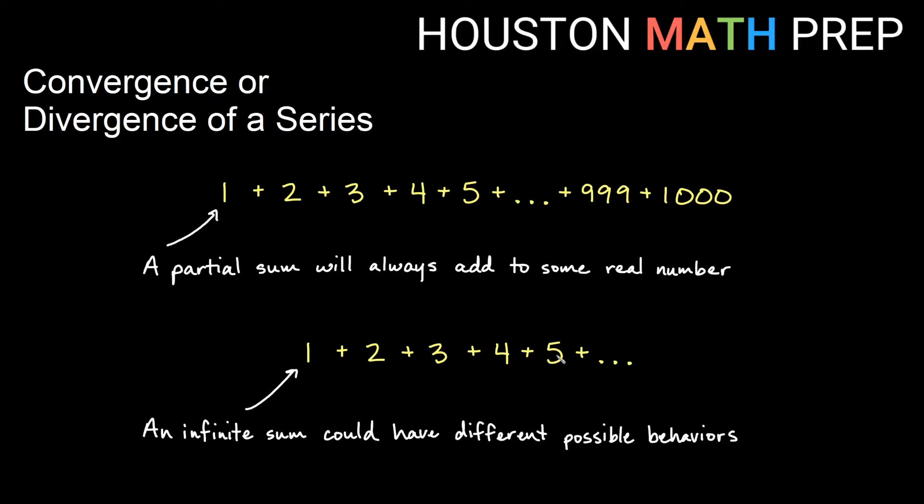Or we can have a list of terms that we're adding up and we add them up forever. We have an infinite number of terms to sum. For an infinite sum, it turns out there are different things that can happen based on what your terms look like.